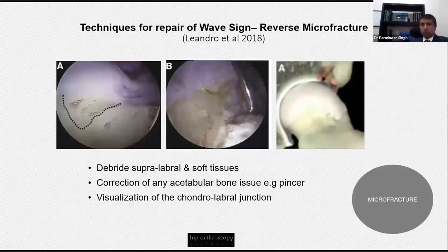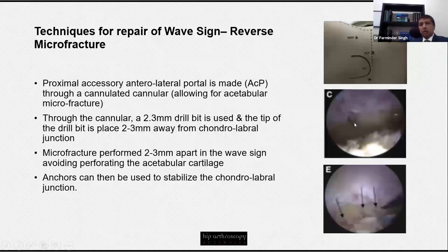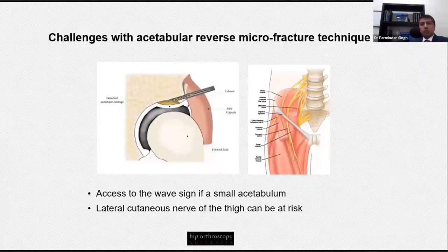Microfracture is another tool in our toolbox. In some cases it is reasonably straightforward, but in others it can be awkward — particularly if you're not at the right angle and perpendicular to the subchondral bone. A method reported in 2018 by Lenardro uses a retrograde microfracture technique via a proximal accessory portal: you clear the capsular tissue, correct the acetabular deformity, and then perform a microfracture. One challenge is accurately placing the drill in a small-volume acetabulum directly into the wave sign area.